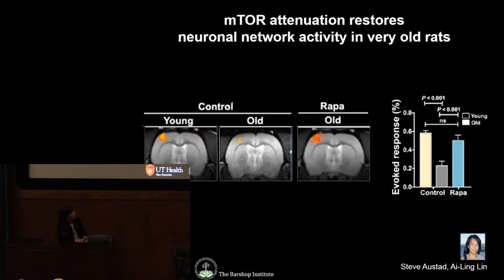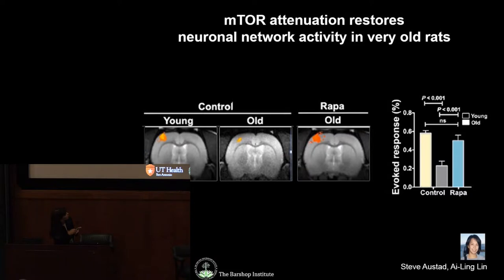This was consistent with studies by Dr. Ellen Ling, who was at our institution, done on a cohort of very old rats at approximately 36 months of age. Using functional MRI, rapamycin treatment completely restored network activation in response to somatosensory stimulation — which is profoundly blunted in very old rats — to levels indistinguishable from younger animals.